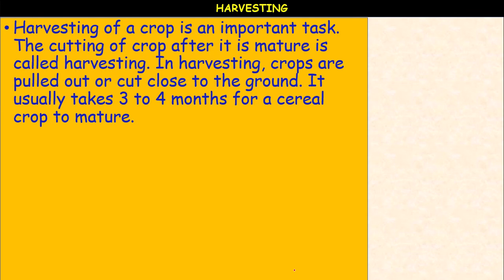What is harvesting? Harvesting of crop is an important task. The cutting of crop after it is mature is called harvesting. Once the crop matures, it is harvested — cut and gathered. In harvesting, the crops are pulled out or cut close to the ground. It usually takes 3 to 4 months for a soil crop to mature. This may be done manually by using a sickle or by using a machine called a harvester.